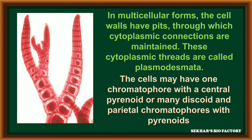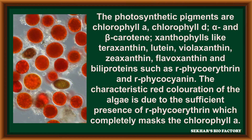The cells may have only one chromatophore with a central pyrenoid, or many discoid and parietal chromatophores with pyrenoids, as a photosynthetic organelle that holds photosynthetic pigments. The photosynthetic pigments are generally chlorophyll A, chlorophyll D, along with alpha and beta carotene, xanthophylls like zeaxanthin, lutein, violaxanthin, zeaxanthin, flavoxanthin, and bile proteins present in the form of R-phycoerythrin and R-phycocyanin.